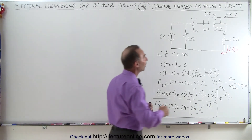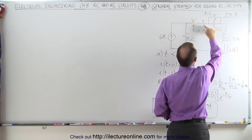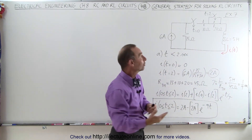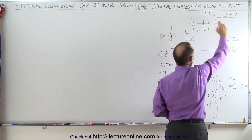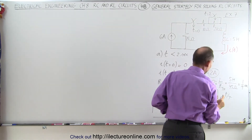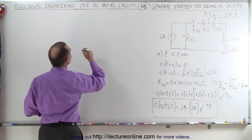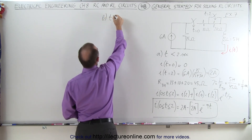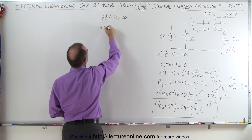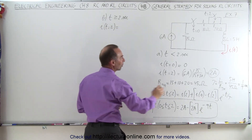What happens next? After two seconds, the second switch closes, and now the current will bypass the 20-ohm resistor and go directly from the 10-ohm resistor to the inductor. That would increase the current through the inductor, because if there's less resistance on this branch, the current will increase. Initially the inductor will fight the increase, so right after the second switch closes, the current through the inductor will be the same as right before the switch closes — that's two amps. So for Part B, when time is greater than or equal to two seconds, the current through the inductor at time equals two seconds is exactly two amps.